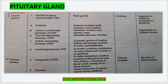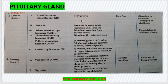Our next gland is the pituitary gland, which is a very important gland. It has two parts: anterior pituitary and posterior pituitary. From the anterior pituitary, important hormones necessary for body growth are secreted, like growth hormone. Its under-secretion causes dwarfism, but over-secretion causes Gigantism in childhood and Acromegaly in adulthood.